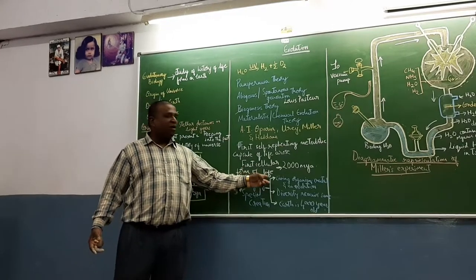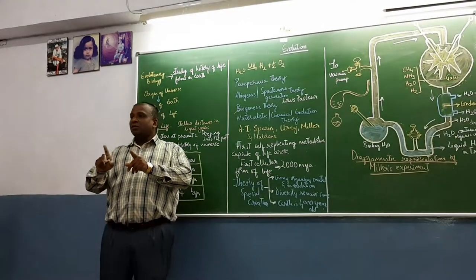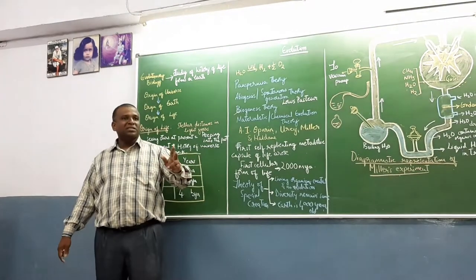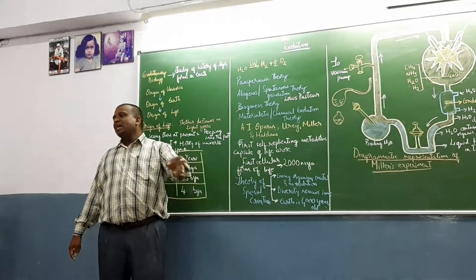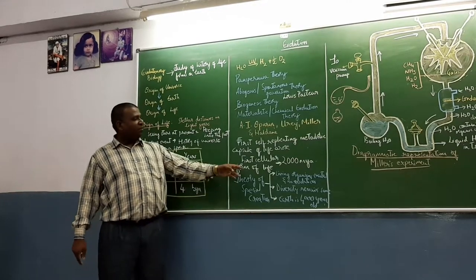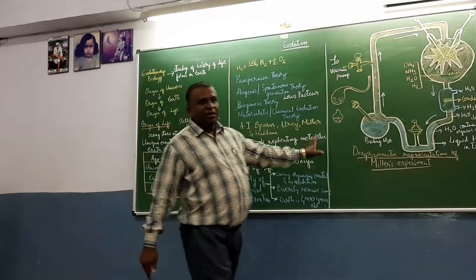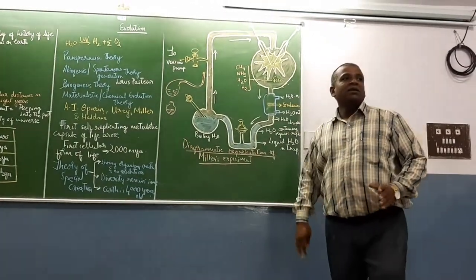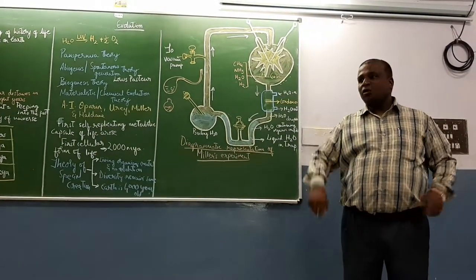Cellular life form - the viruses are acellular. They have two characters - proteins and nucleic acids. So the first cellular form of life might have evolved from those and became living. Now the materialistic or chemical evolution theory was proved by Stanley Miller. He prepared an apparatus called Stanley Miller's apparatus. He replicated the primitive atmosphere - no oxygen was there.